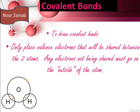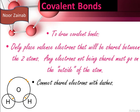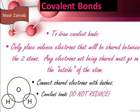In the second step, only place valence electrons that will be shared between two atoms. For example, in a water molecule, oxygen has six valence electrons and hydrogen has one valence electron. Any electrons not being shared must go on the outside of the atom. Connect shared electrons with dashes. Note that covalent bond formulas do not reduce, whereas ionic bond formulas do reduce.